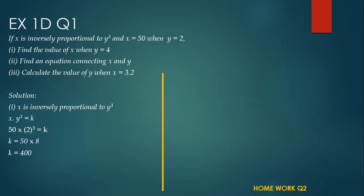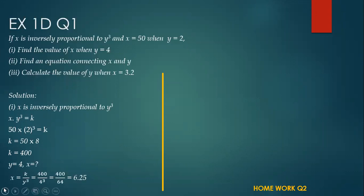Now we are going to find the value of x. We can use this equation, and x will be k divided by y-cubed. Replace k with 400 and y with 4. The cube of 4 is 64, and 400 divided by 64 is 6.25. That's the value of x.